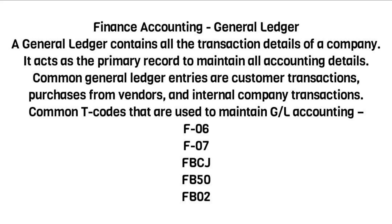Finance Accounting General Ledger: A general ledger contains all the transaction details of a company. It acts as the primary record to maintain all accounting details. Common general ledger entries are customer transactions, purchases from vendors, and internal company transactions.